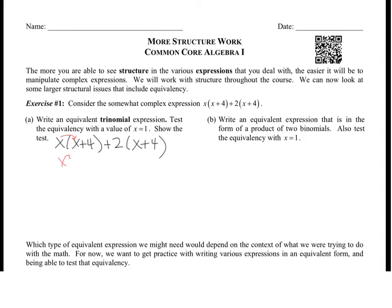X times X is X squared, and X times 4 is 4X. So it becomes X squared plus 4X, plus 2 times X is 2X, and 2 times 4 is 8. We need to combine our like terms, so it becomes X squared plus 6X plus 8. This is our equivalent expression for the original one.